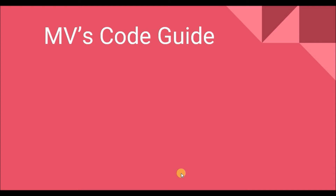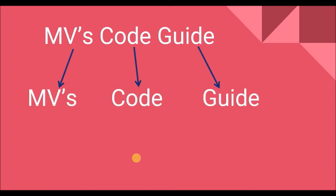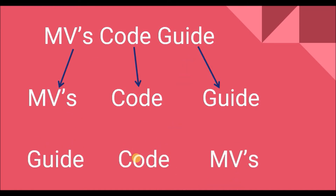Consider this sample input: 'MVs code guide'. This is a string consisting of three words. The problem is I need to reverse the order of these words. I get an idea that if I split this string into different words and then start the manipulation, it would be easy to solve the problem. The first step should be to split this string into three words: MVs, code, guide.